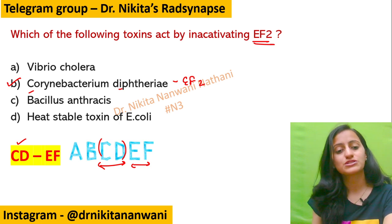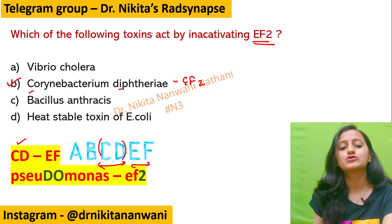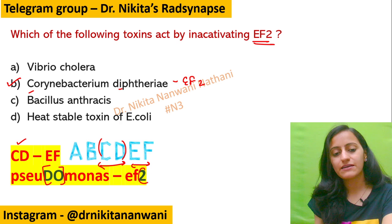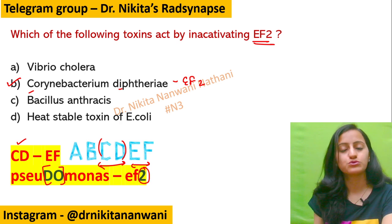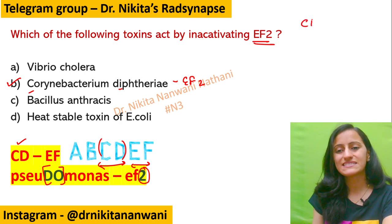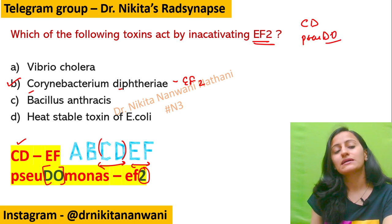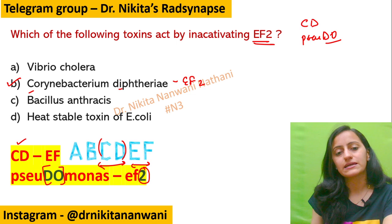The other bacterial toxin which acts by EF2 inactivation is Pseudomonas. To remember that, recall that 'pseudo' sounds like 'though,' and 'though' means two — so EF2. Remember ABCDEF, and Pseudomonas is your EF2 inactivation. By inactivating EF2, basically they are inhibiting protein synthesis.